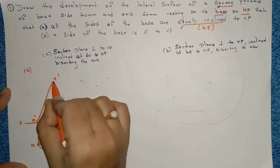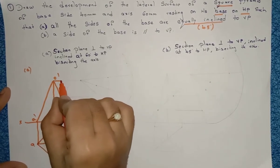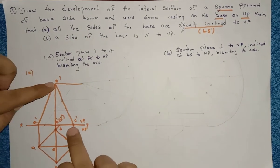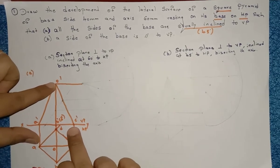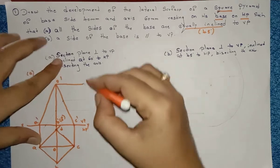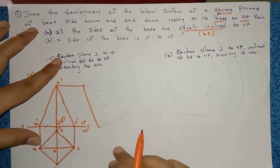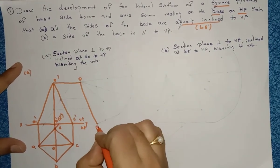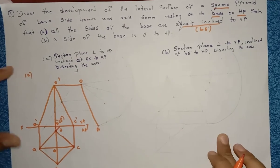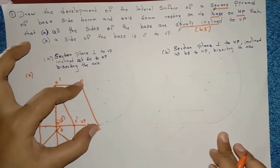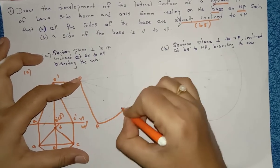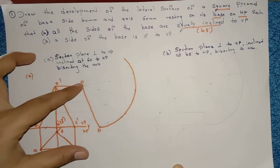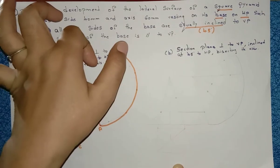Now we are going to draw the development of this square pyramid. From O dash, draw a straight line of any length. Exactly parallel to the slant edge, move your scale and draw a line. Name this point as O and this point as A. With O as center and OA as radius, draw an arc of any length.